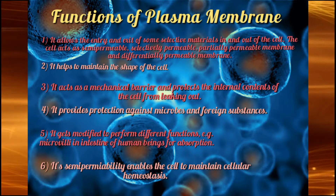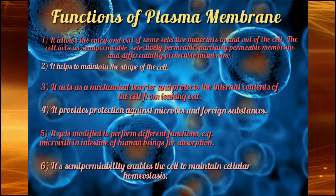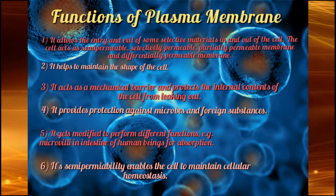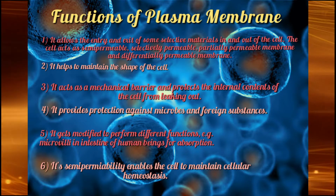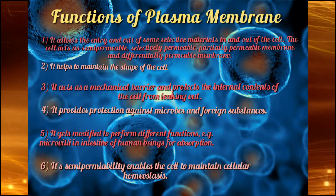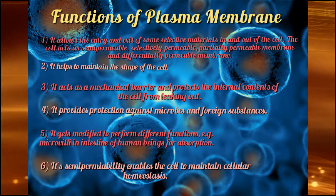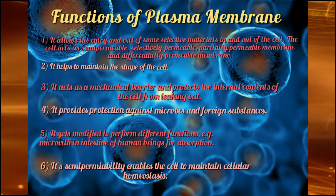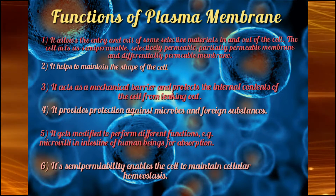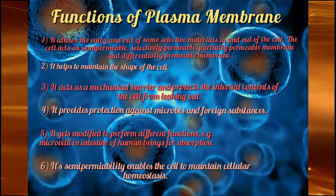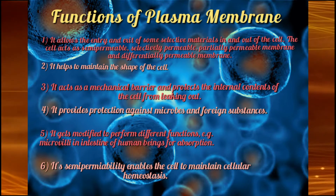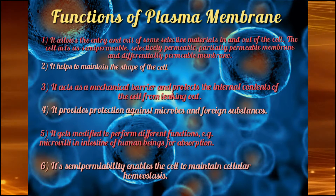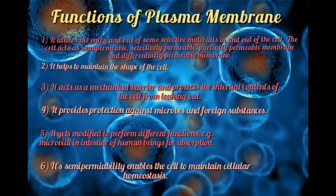The functions of plasma membrane: it allows the entry and exit of some selective materials in and out of the cell. Plasma membrane allows simple soluble molecules — nutrients necessary for nourishment of the cell — to enter, and waste material produced in the cell exits through it. Because it allows entry of necessary things like water molecules and simple soluble molecules and removes waste materials through the pores, it is also called selectively permeable membrane or semi-permeable membrane. Plasma membrane also helps in gaseous exchange.